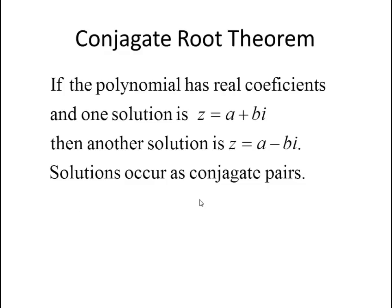Now it's time to talk about the conjugate root theorem. It says: if the polynomial has real coefficients — not like the last couple, but real coefficients — and we know one solution is z equals a plus bi, then another solution is a minus bi. That is, the solutions occur as conjugate pairs. We're going to use this property now to solve a problem.